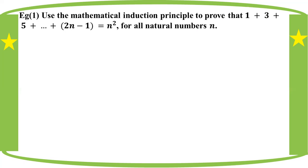This is the first step — number one: use the mathematical induction principle to prove that 1 plus 3 plus 5 plus ... plus (2n minus 1) equals n squared. This is a mathematical statement.